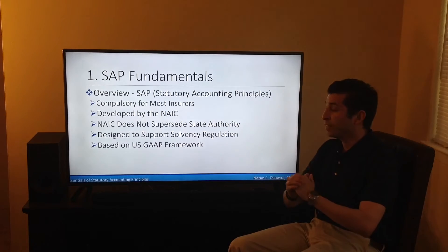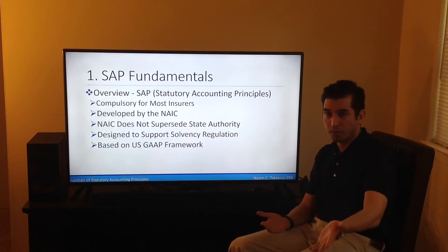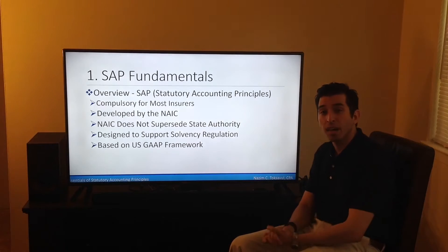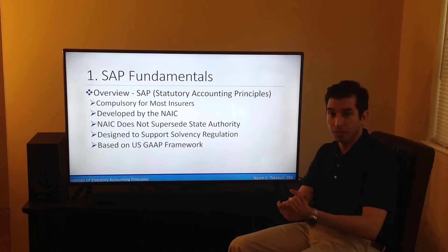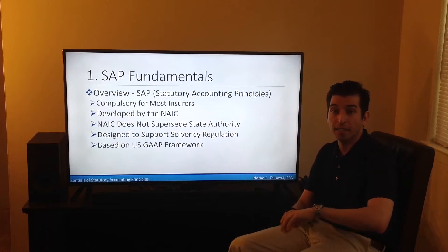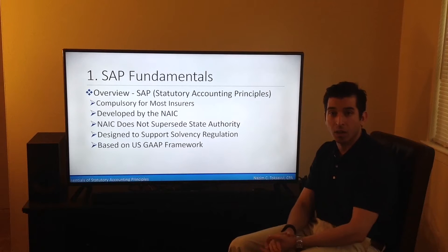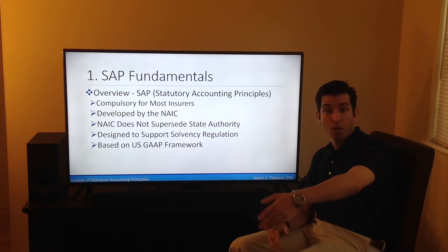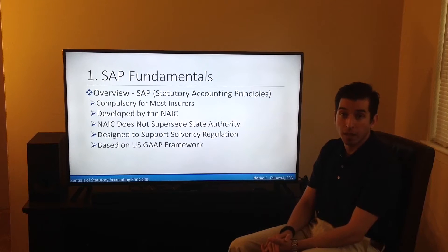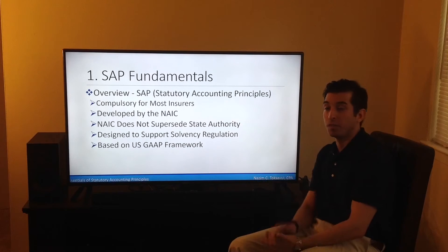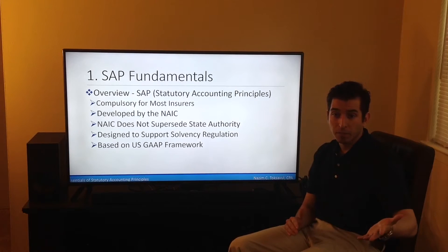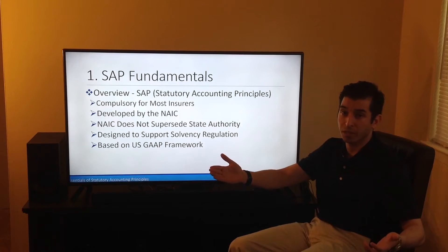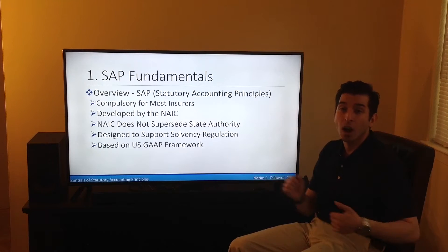The NAIC develops statutory accounting principles, but their authority does not supersede the state's regulatory bodies. As a result, there will be some variances and divergence among the states in the requirements for statutory filings by insurance companies. For example, the state of California's requirements for statutory filings may differ somewhat compared to the statutory filings of New York.